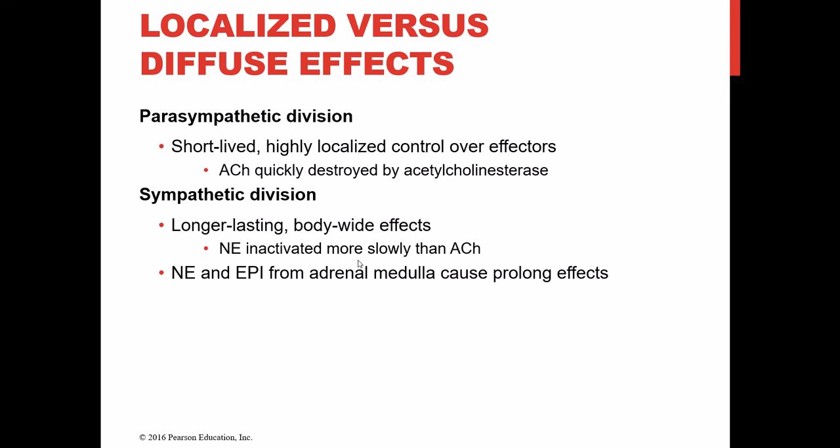Comparing the duration of effects: because the parasympathetic system secretes acetylcholine at effectors, its effects tend to be very short-lived and localized, since acetylcholinesterase quickly degrades acetylcholine. The sympathetic division tends to have longer-lasting, more systemic effects — partly because norepinephrine isn't degraded as quickly as acetylcholine, and also because epinephrine and norepinephrine from the adrenal medulla travel through the blood like hormones, contributing to a prolonged systemic effect.